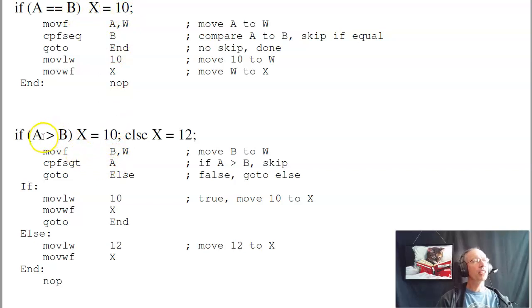Or more complicated, if A is greater than B, x is 10, else x is 12. That's an if then else statement. So to do that, I'll set up the if A is greater than B. I'll first move B to W, to compare skip if greater than, is A greater than W, meaning is A greater than B. If so, skip. That'd be the if command. I'll move 10 to W, move W to X, and I'm done. Otherwise, I don't skip. I don't skip, which means I hit this line, I go to else. I'll move 12 to W, move W to X, then I'm done. So that's how you do an if then else. That's how you do the skip if greater than. That kind of gives you program control.